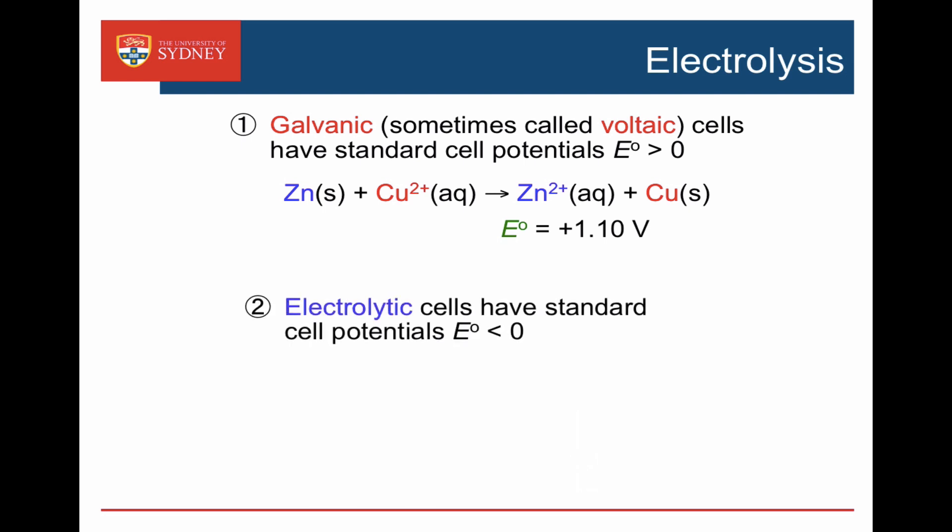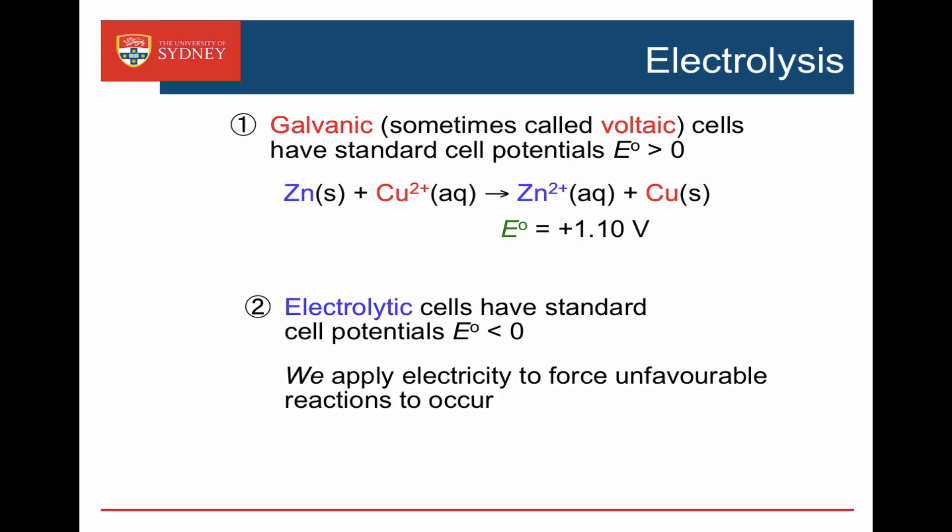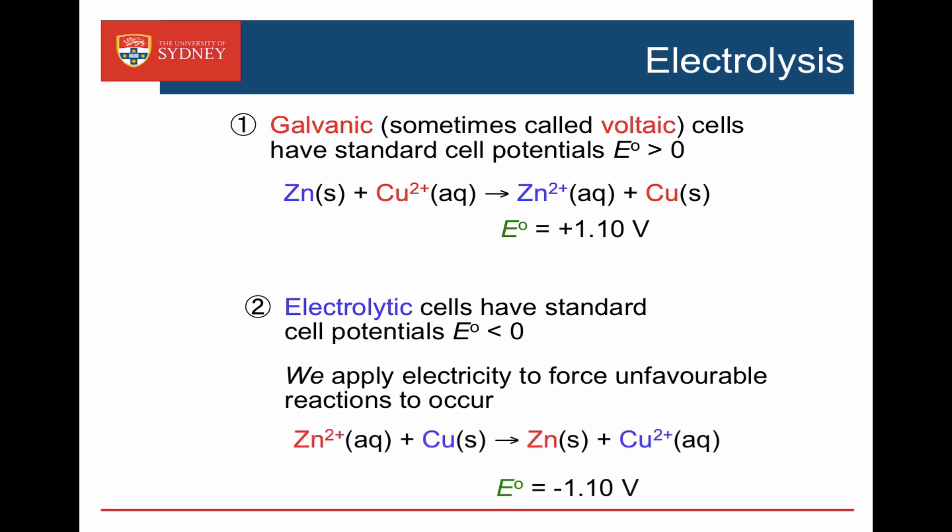An electrolytic cell has a standard cell potential which is negative — it's an unfavourable chemical reaction, and we can use electricity to drive that unfavourable chemical reaction. For example, the reverse of the zinc and copper ions reaction: we can make zinc ions react with copper to give zinc metal and copper ions, as long as we provide a potential greater than 1.1 volts.